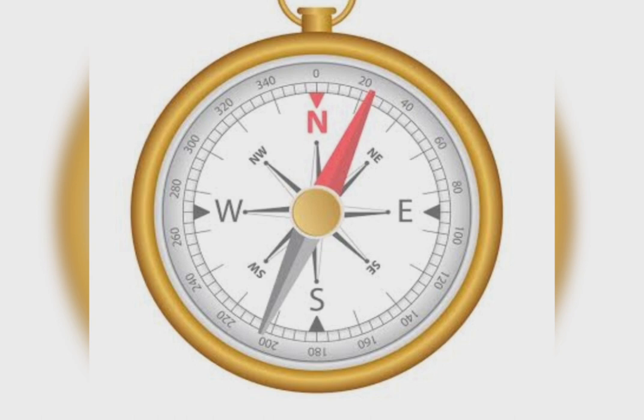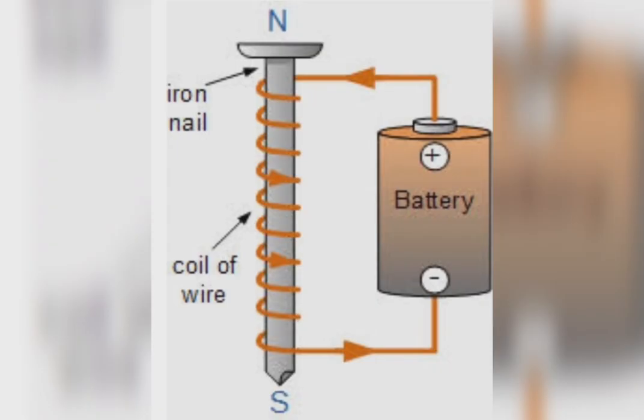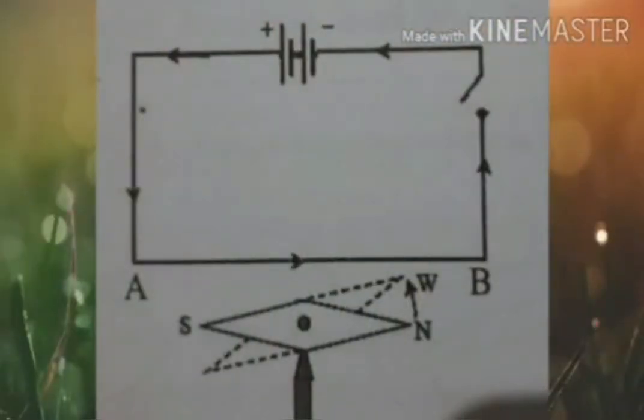A magnetic compass or magnetic needle is the device used to find the polarity of a magnet and to check the presence of a magnetic field. In a magnetic compass, there is a magnetic needle which can move freely. The magnetic field around an electromagnet is created due to the flow of current through the coils in it. By this, we can assume that a magnetic field will be developed when current passes through a straight conductor.